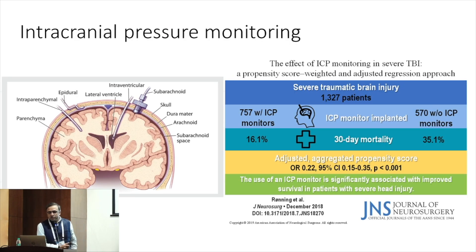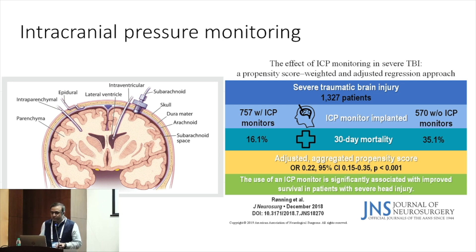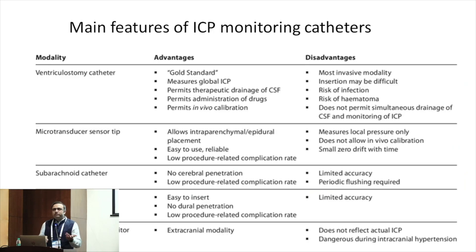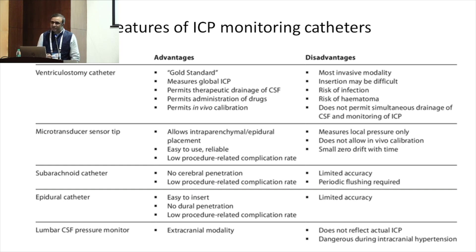There are different types of ICP monitors. The intraventricular monitor is the gold standard. Otherwise we have intraparenchymal, epidural, and subarachnoid monitors. The guidelines say that ICP monitoring has a significant association with improved survival in severe head injury — GCS less than 8 — in the initial period. The gold standard ventriculostomy catheter is also therapeutic — it permits drainage of CSF and administration of drugs, and allows in-vivo calibration. However, it is invasive, with risks of infection and hematoma, and requires a surgeon to insert it.